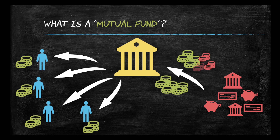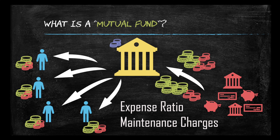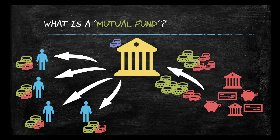Similar to what we saw in the case of banks, there is also a profit associated that is distributed among the people. While doing so, the mutual fund earns what is called an expense ratio. This expense ratio is the fee that the mutual fund charges to maintain all its expenses while carrying out these different types of transactions.